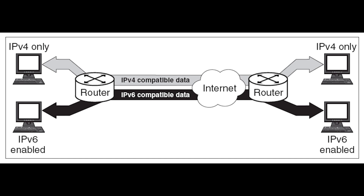When both devices are dual stack, the two devices agree on which IP version to use. This capability is useful when transitioning from one to another during the adoption and deployment phases. It allows IPv6 packets to be transmitted over an IPv4 network without having to create a complex tunnel.